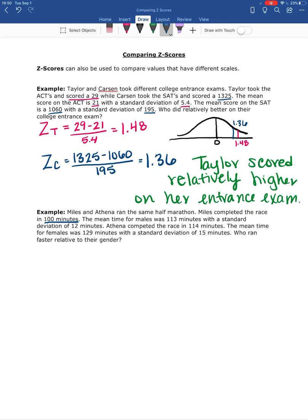So for Miles, it took him 100 minutes. The mean for males was 113 and the standard deviation was 12. So I'm going to calculate a Z-score for Miles. So he had a score of 100 minus the mean of 113 over 12. So again, 100 minus 113 gives us negative 13 divided by 12, which is negative 1.08. Sorry, that 13 should be negative, so negative 1.08.